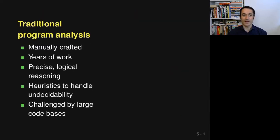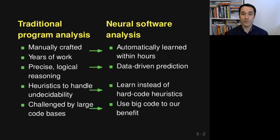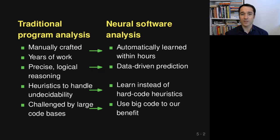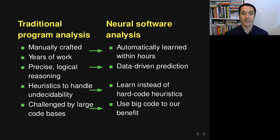Comparing neural software analysis to the traditional approach: instead of manually crafting the analysis over several years, it's learned automatically within hours or maybe days. Instead of precise and logical reasoning, the analysis is built in a data-driven form by learning from data what to predict. Neural analysis also contains a lot of heuristics — probably even more than traditional analysis — but these are automatically learned. And instead of being challenged by large code bases, neural software analysis turns this into part of the solution, because more code means a stronger analysis.